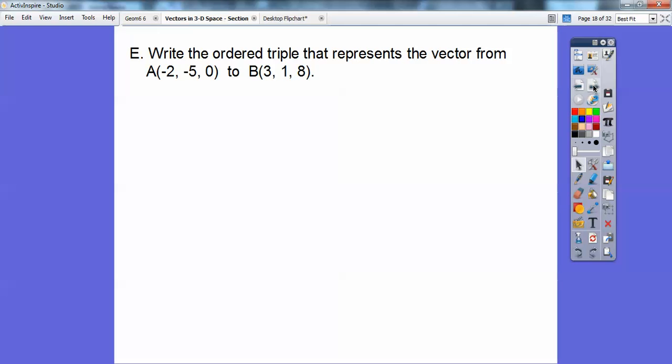So here, write the ordered triple that represents the vector from A to B. So my vector AB is I just subtract this x minus this x, and then this y minus this y, and then this z minus this z right here. That's what that says right there. Clean it all up, and you get the vector becomes the ordered triple (5, 6, 8). Easy, huh?